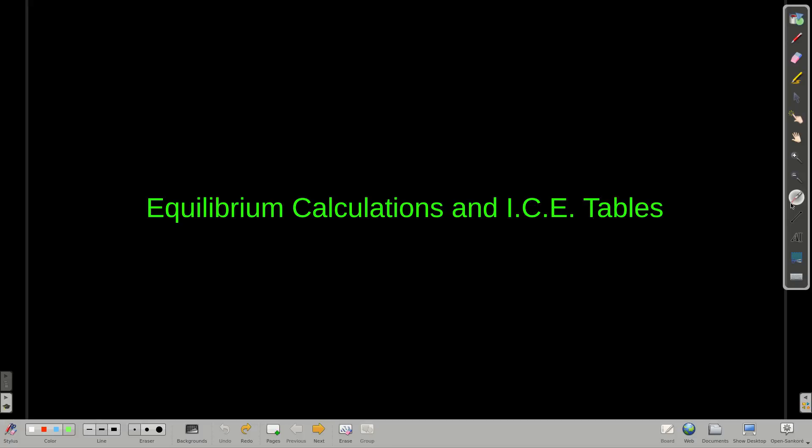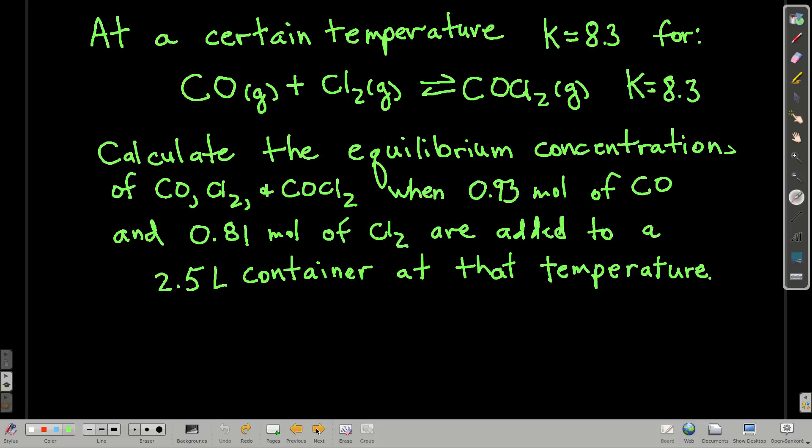In this module, we're going to talk about equilibrium calculations using what are called ICE tables, which I'll show you in just a moment. But let's just show this with an example, the easiest way to do it. So here we go. At some temperature, the equilibrium constant for this reaction here is 8.3.